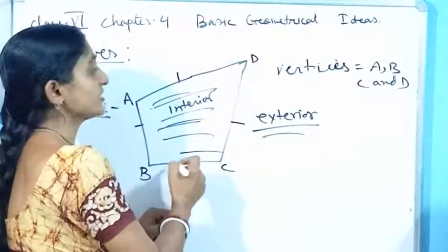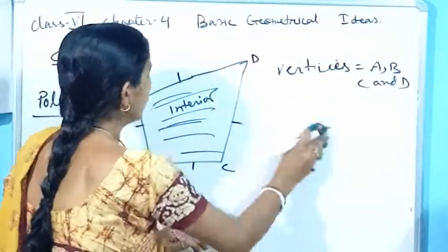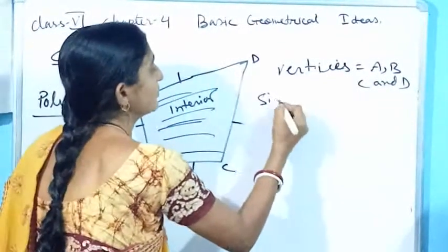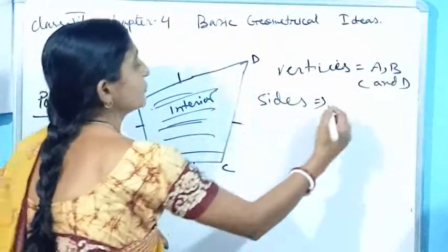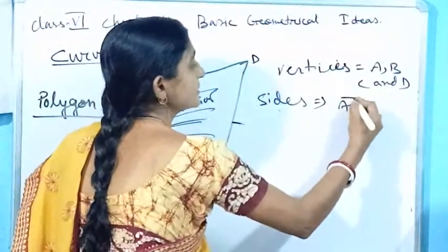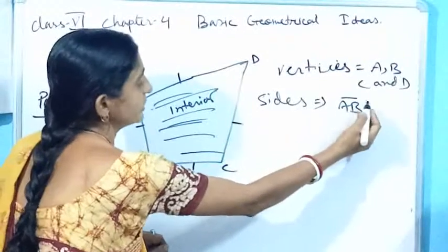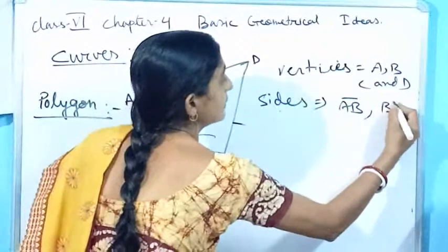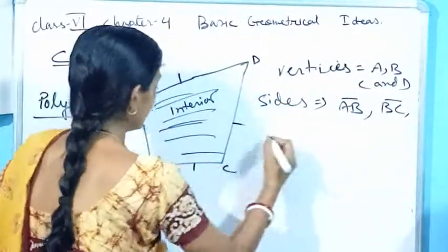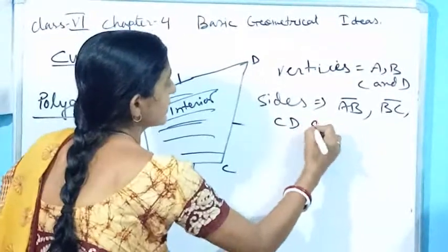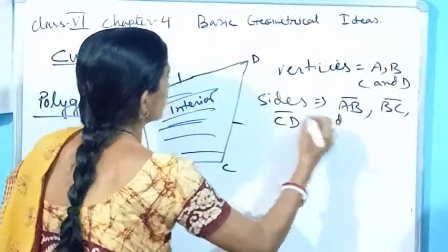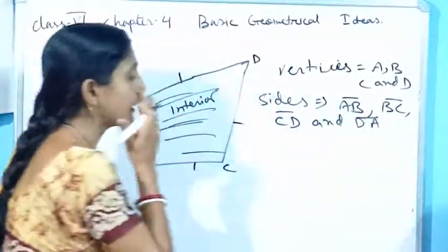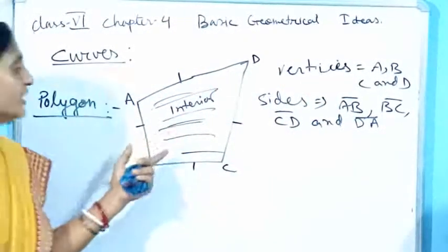Let's come to the sides now. How many sides do we have? First one is AB, then BC, then CD, and another one is DA. For a quadrilateral, I have got these many sides and these many vertices.